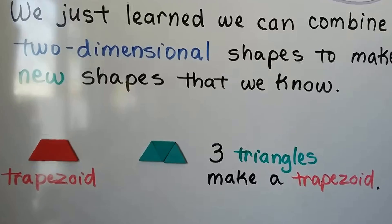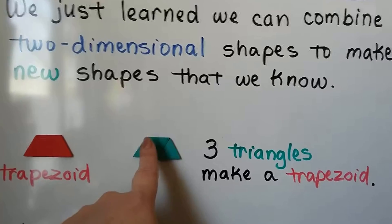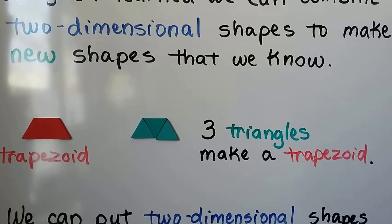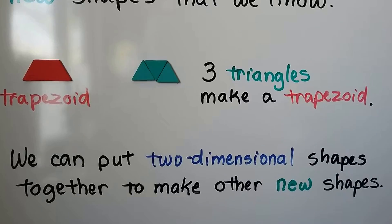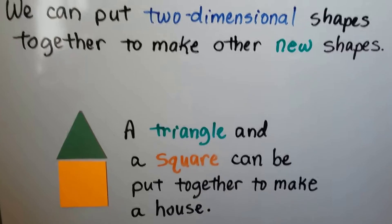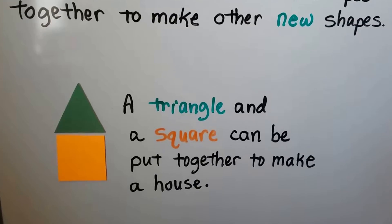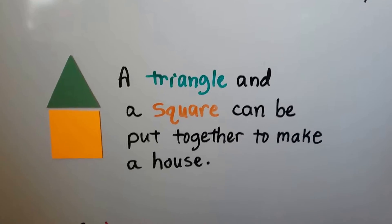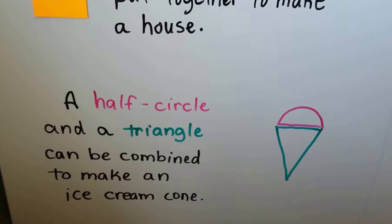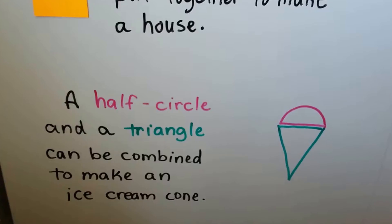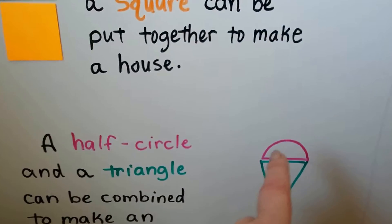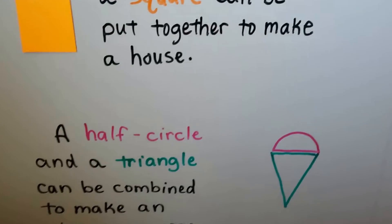We can make a trapezoid with three triangles — just put three triangles together and we've made a trapezoid. We can put two-dimensional shapes together to make other new shapes. A triangle and a square can be put together to make a house. A half circle and a triangle can be combined to make an ice cream cone. The triangle is down here and this half of a circle is a semicircle.